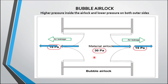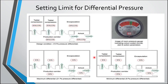The most important thing is to set the differential pressure correctly. In this figure, the area is designed so that the production corridor is at 30 Pascal and all surrounding areas are at 15 Pascal. That means 15 ± 3 Pascal is the limit for the surrounding areas, and 30 ± 3 Pascal is the limit for the production corridor.